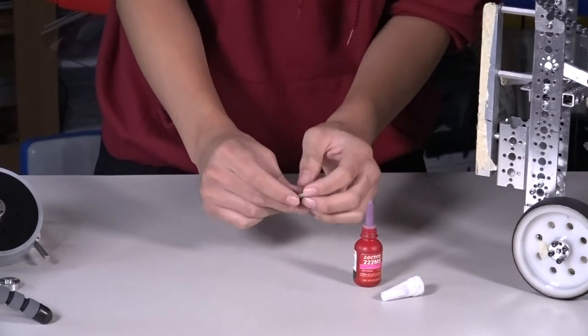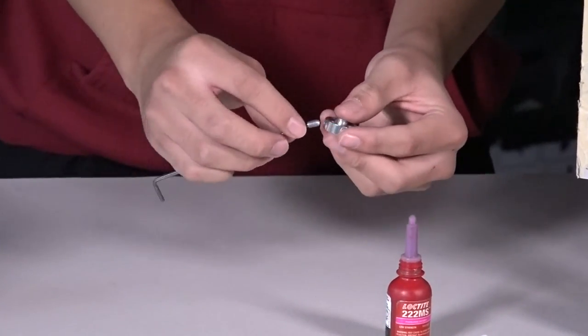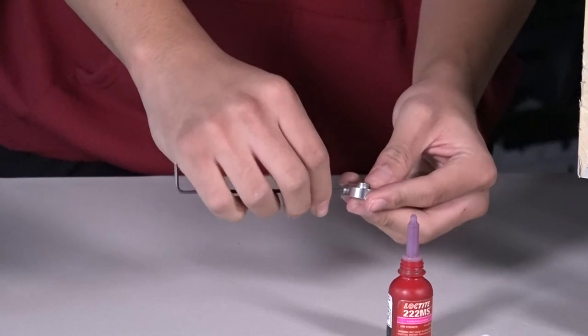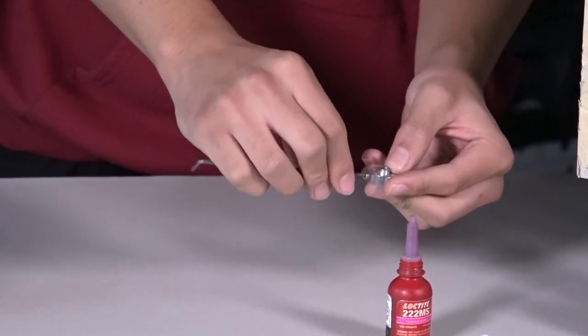Now you have the set screw covered in Loctite so you take your standard motor hub and you just screw it in. This Loctite functions like a metal glue, making sure this set screw doesn't loosen during competitions.